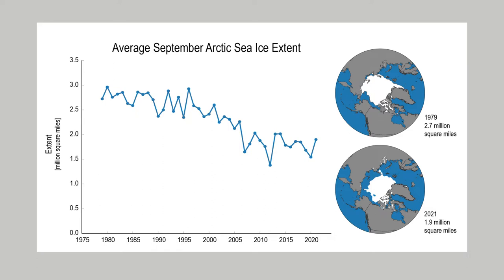This chart shows the Arctic sea ice extent has declined by about 30% since 1979. This can also be seen in these two maps, which show the minimum Arctic sea ice has decreased from 2.7 million square miles of Arctic sea extent in 1979 to 1.9 million square miles in 2021.